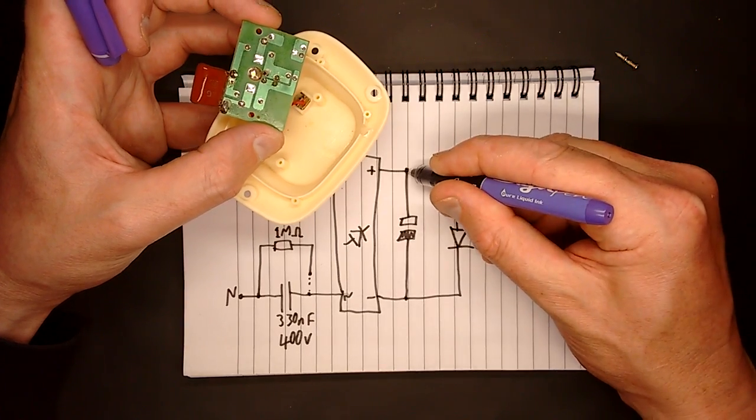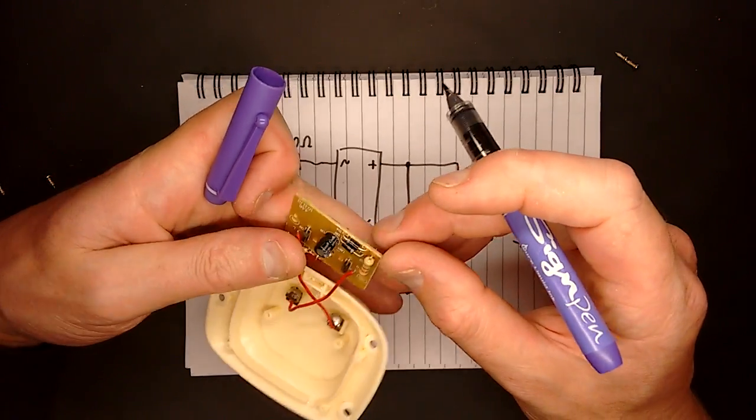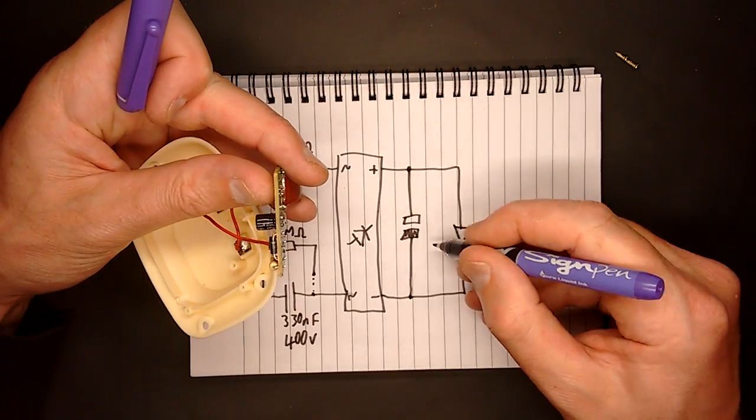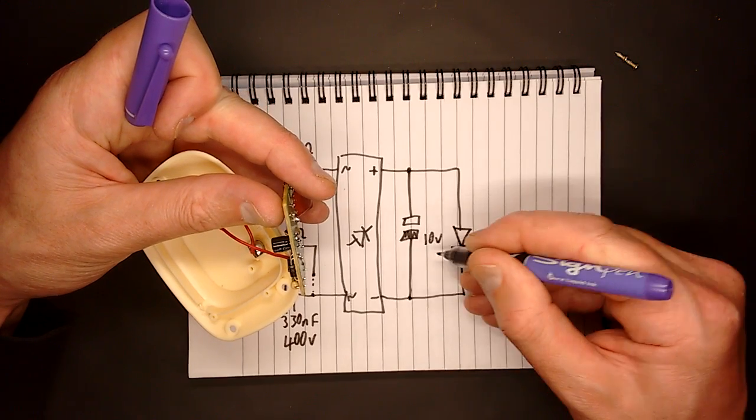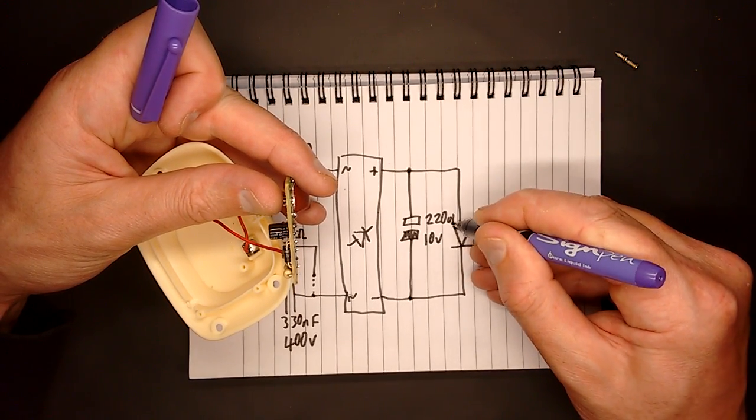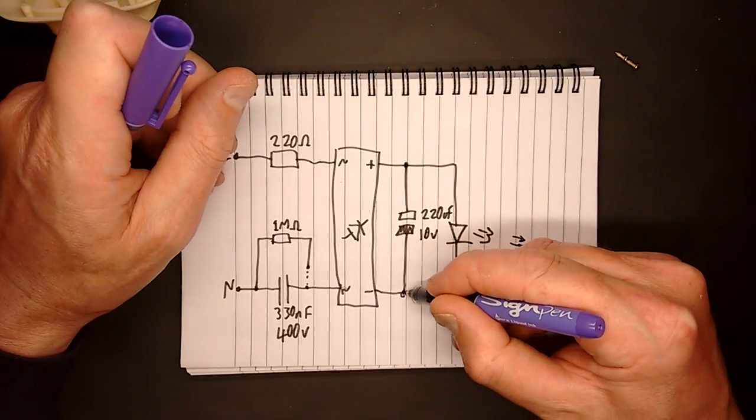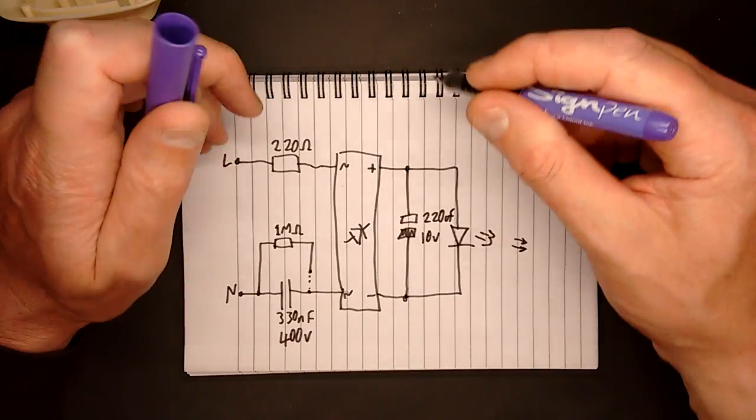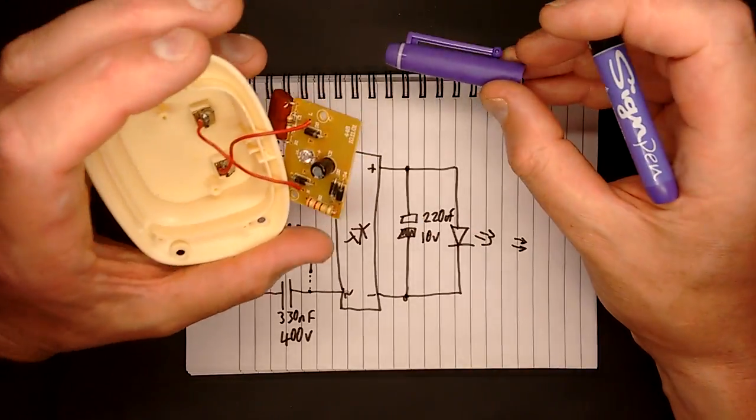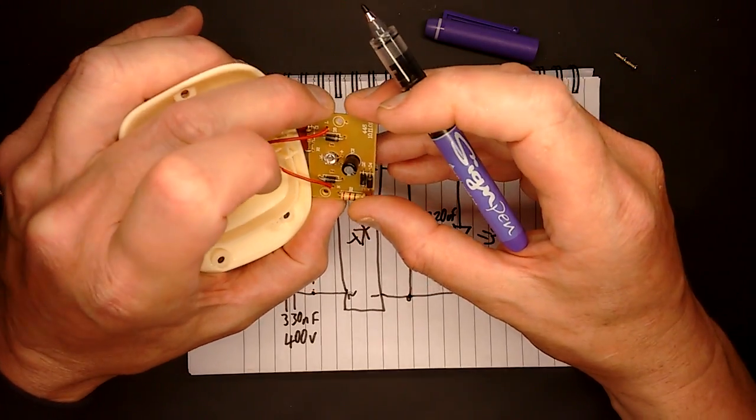So here's an electrolytic capacitor just connected across that. Let's check the polarity is right. Yes, it is. And it's rated 10 volts, 220 microfarad. So if the LED went open circuit, the voltage across this 10 volt LED would shoot up to about 330 volts and it would do that thing where this capacitor would limit the current and it would get very hot and then it would vent. But as we've seen in previous experiments, it does so in a controlled manner.